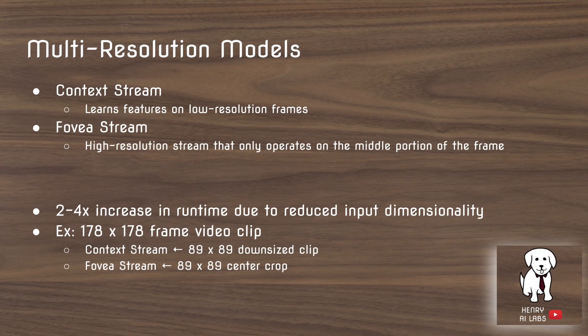The multi-resolution model is used to reduce computation. They have a context stream and a foveal stream. The context stream operates on the down-sampled overall clip, whereas the foveal stream focuses on the high-resolution center crop. They choose a center crop due to camera bias.